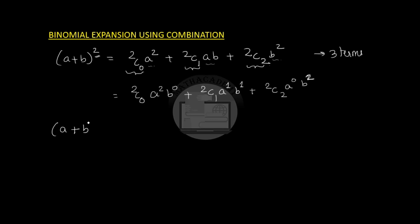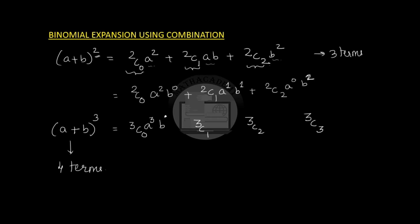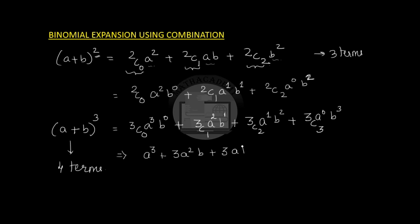Similarly, let us expand (a+b)³. We know there will be 4 terms total, and the coefficients will be 3C0, 3C1, 3C2, and 3C3. The terms are: 3C0·a³·b⁰ + 3C1·a²·b¹ + 3C2·a¹·b² + 3C3·a⁰·b³. Applying the combination formula: 3C0=1, 3C1=3, 3C2=3, 3C3=1. So we get a³ + 3a²b + 3ab² + b³.